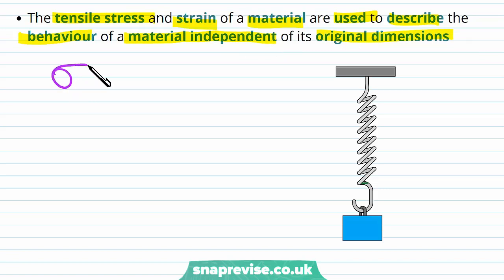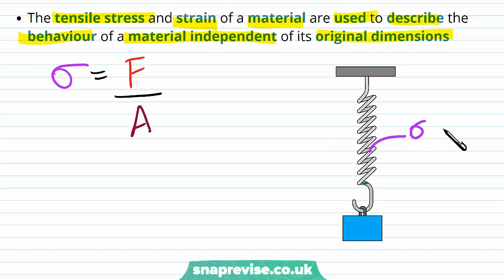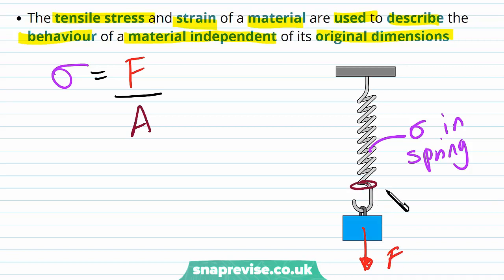The stress a material experiences is equal to the force applied to it per unit area. Because we're dividing force per unit area — finding the force per metre squared — we're not taking the material's dimensions into account. So we can calculate the stress in the spring when we apply a certain force and when the spring has a particular cross-sectional area A. This is also the case with strain, which is independent of the original dimensions of the material.